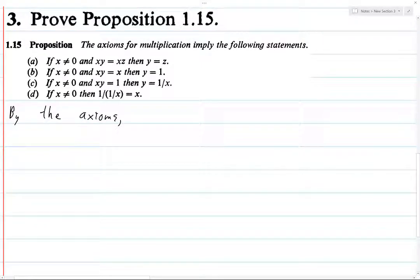So all of these, all parts of these, a, b, c, and d, these all use x not equal to 0. So we're just going to use the same x for all of these. So by the axioms, there exists a multiplicative identity 1, and there exists some multiplicative inverse 1 over x, which is the inverse of x, and that exists because x is not 0 in this case.